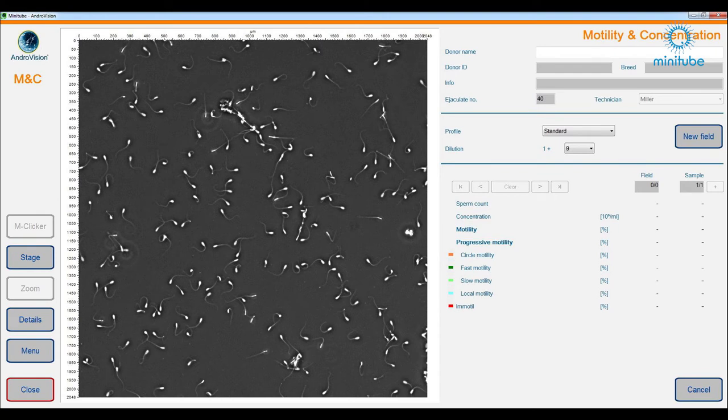This is how an optimal microscopic picture should look like. All semen cells appear fully white on a black background and the light is distributed evenly on the picture.